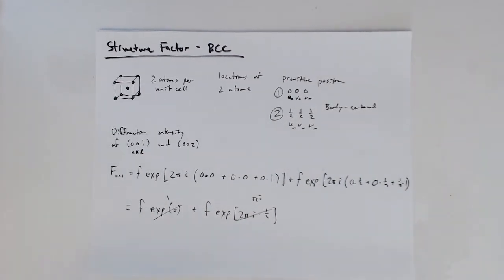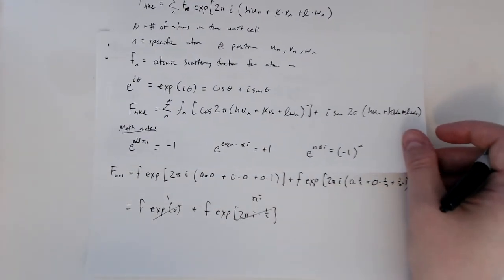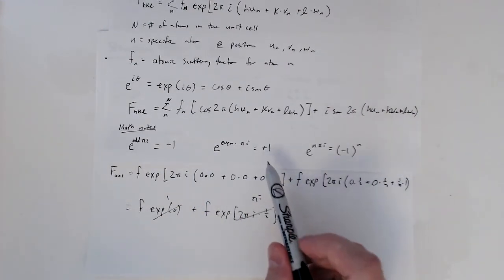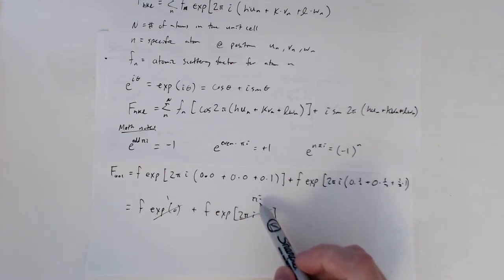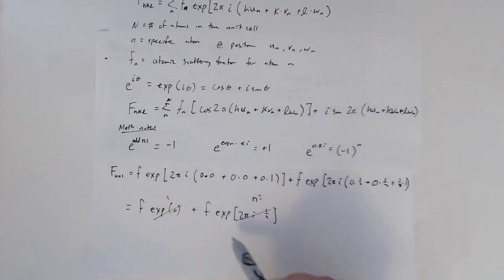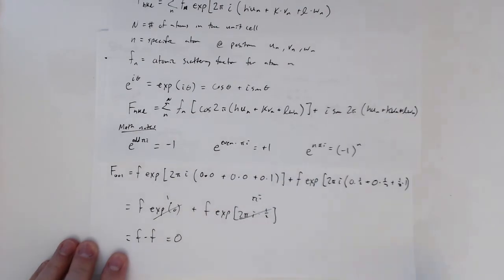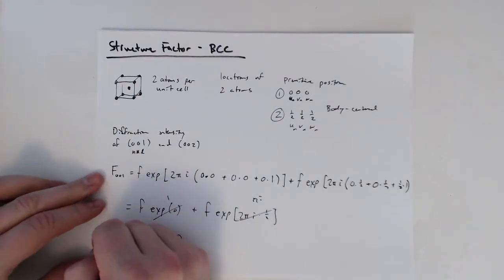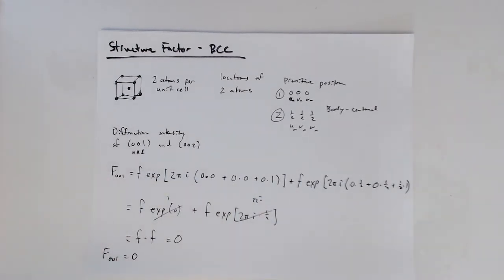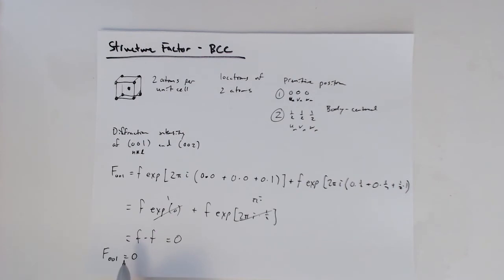From our mathematical relationships, e^(πi) corresponds to an odd case, which gives −1. So the second term contributes −f. The total structure factor for (0,0,1) is f + (−f) = 0. This confirms what we showed visually: for a BCC structure, the body-centered position cancels the diffraction from (0,0,1)-type planes.